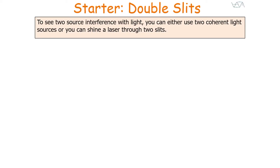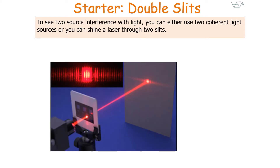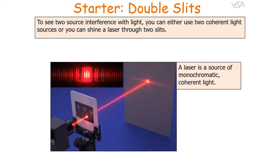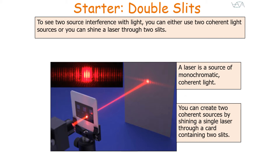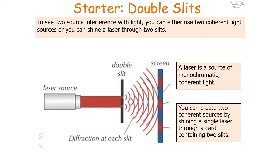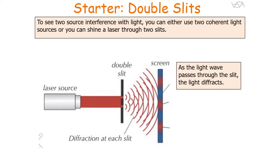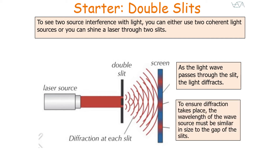To see two-source interference with light, you can either use two coherent light sources, or you can shine a laser through two slits, as shown in this particular diagram. A laser is a source of monochromatic coherent light. You can create two coherent sources by shining a single laser through a card containing two slits, as shown in this picture and diagram. As the light wave passes through the slit, the light diffracts. To ensure diffraction takes place, the wavelength of the laser has to be similar in size to the gap of the slit.